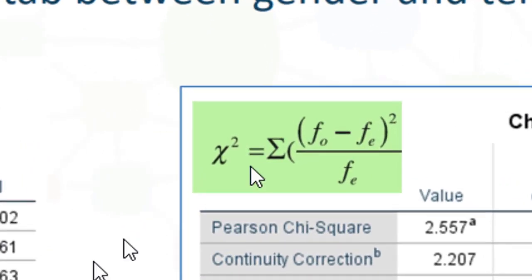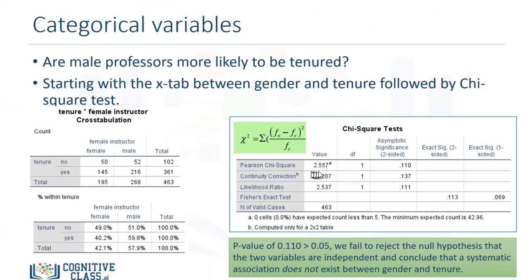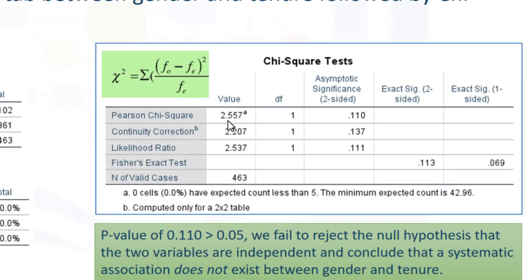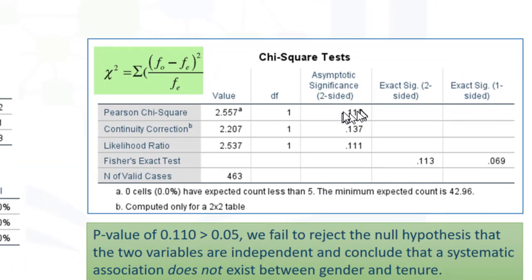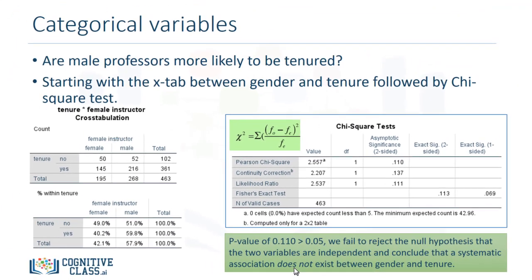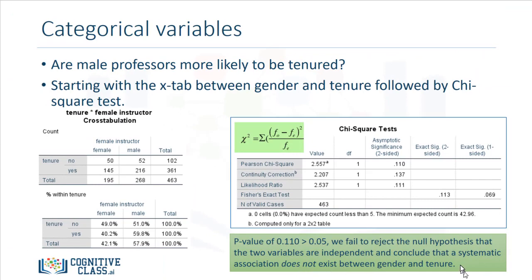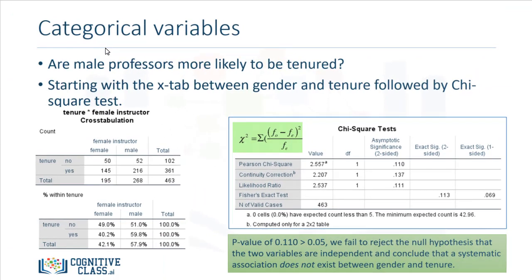So how do we do the chi-square test? The statistics for the chi-square test produce a value of 2.55, and the significance or p-value is 0.11. We do have a threshold or rule of thumb to work with. Since the p-value of 0.11 is greater than 0.05, we fail to reject the null hypothesis that the two variables are independent. Therefore, we conclude that a systematic association between gender and tenure does not exist. This was an example of a categorical variable.